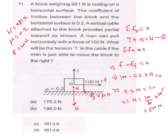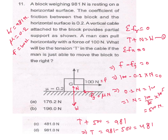Putting this value into equation 1: T plus 500 equals 981, so T equals 981 minus 500, which gives T equal to 481 N.